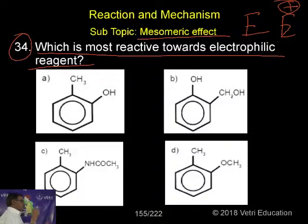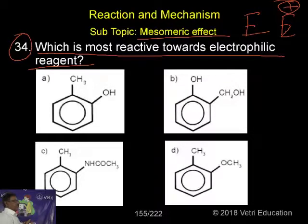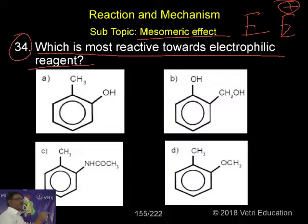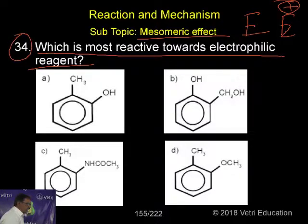For this electrophile to attack the benzene ring, what condition is required? The benzene ring should have a negative charge. For the benzene ring to have negative charge, an electron-releasing group must be present. So generally, an electron-releasing group will activate the ring towards electrophilic substitution, while an electron-attracting group will deactivate the ring.